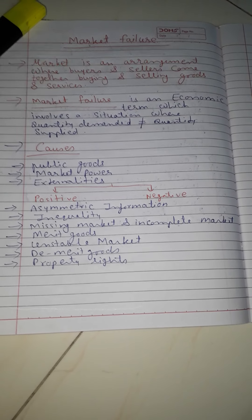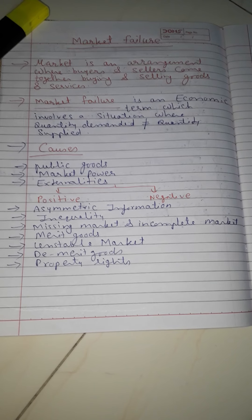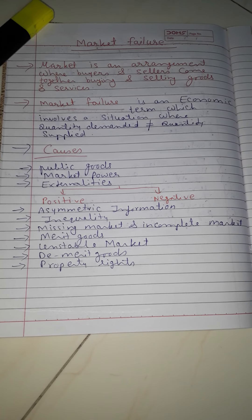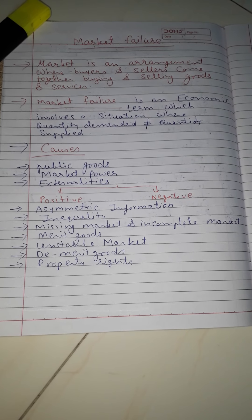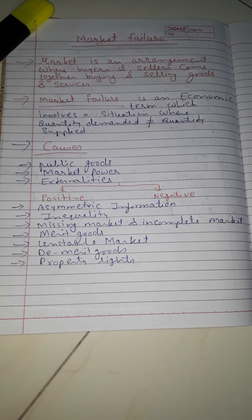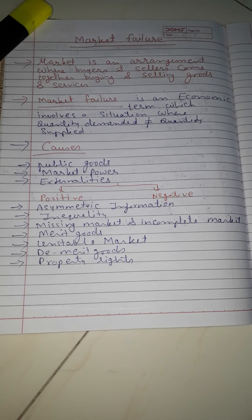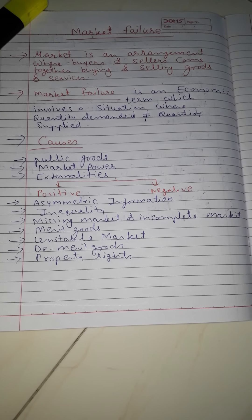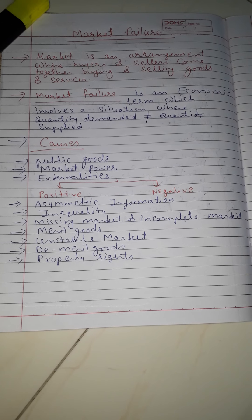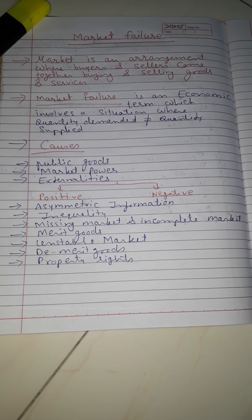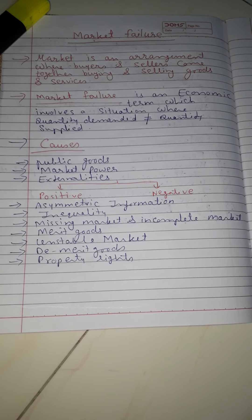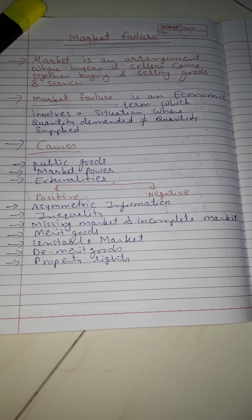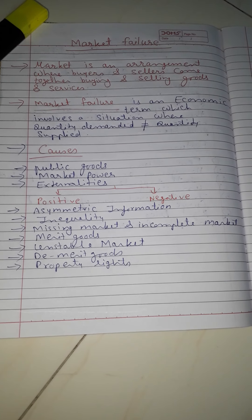The next reason is externalities. Externalities means the activity of one person affecting another person. For example, if I am increasing my production of chemical goods, my production increases pollution in the environment — that is known as externalities. There are two types: positive externalities, where the impact is positive, and negative externalities, where the impact is negative, such as pollution.